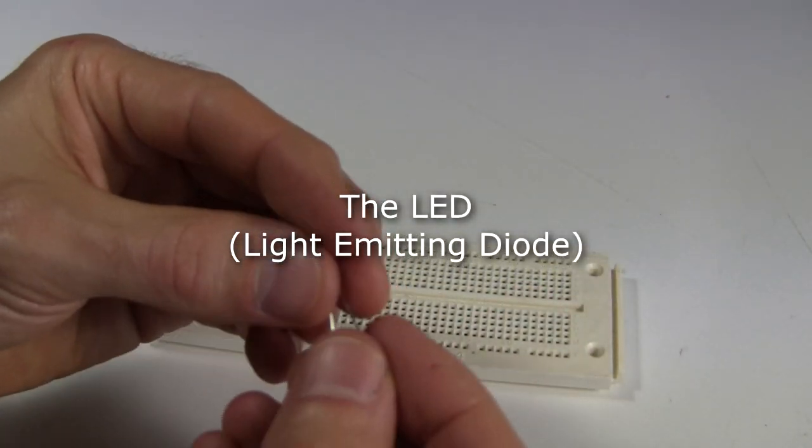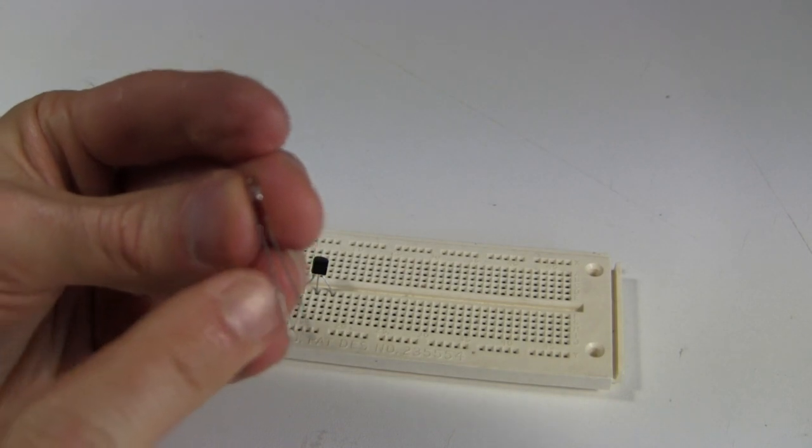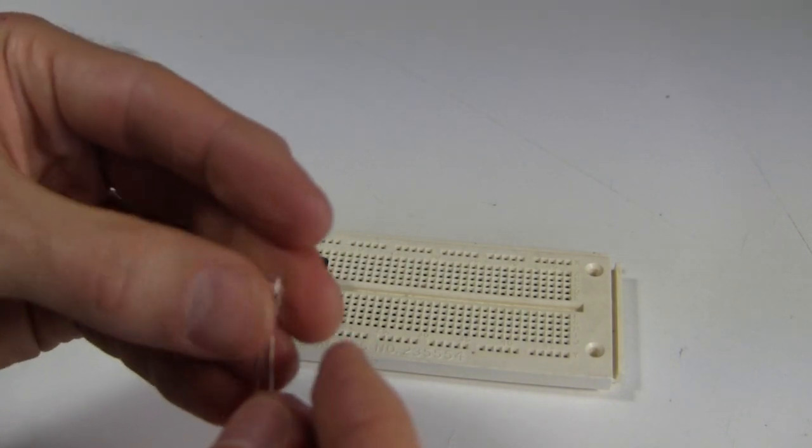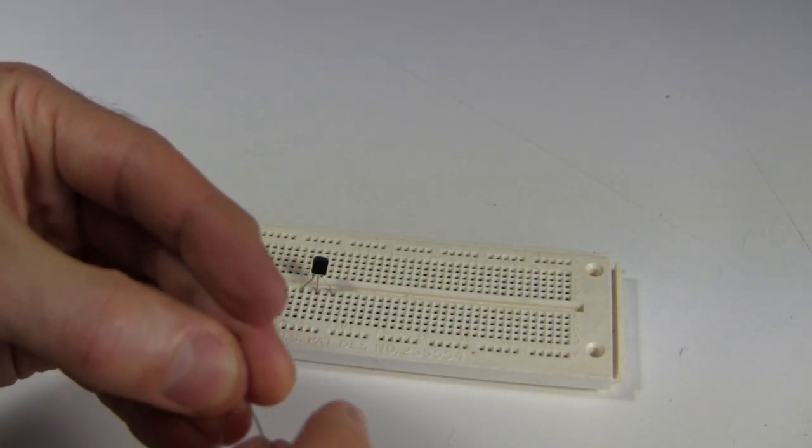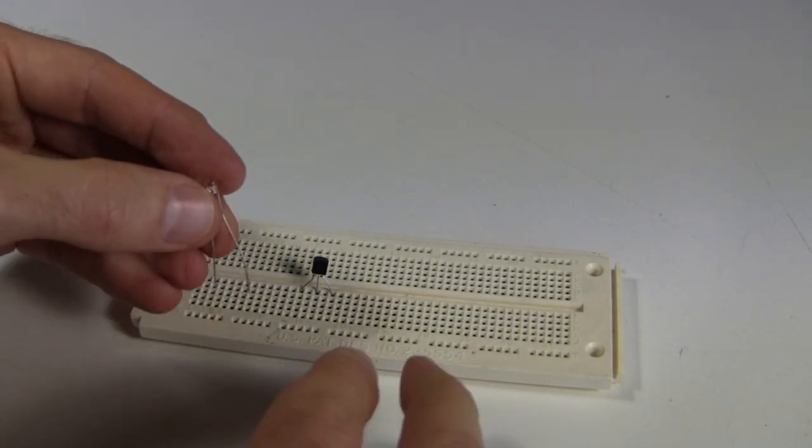What about the LED? Well the same thing with the LED. The LED has one leg longer than the other one. And that's also noted in the diagram. So use that as a guide as to where to put the legs.